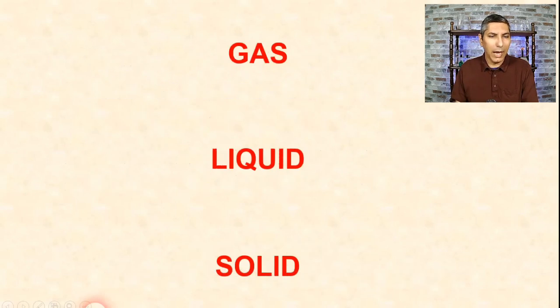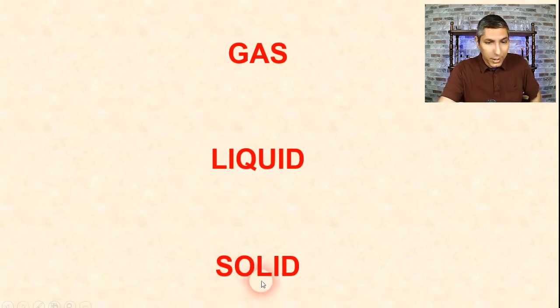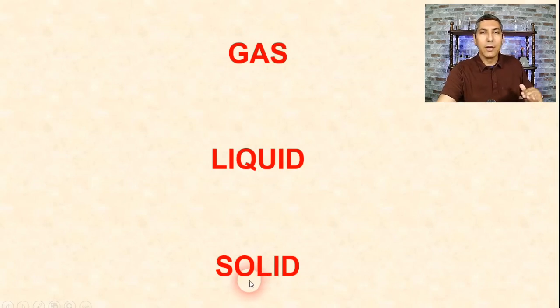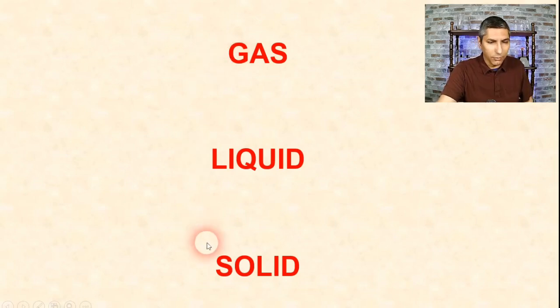In this visual organizer I have solid written on the bottom of my diagram, mainly because solids have the least energy in their particles. Liquid is higher because it has more energy, and gas is the highest because it has the most energy in its particles.